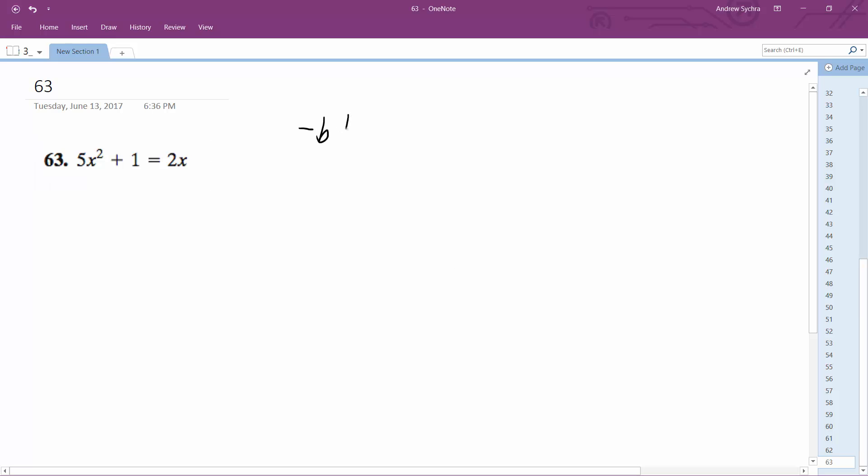So opposite of b plus or minus the square root of b squared minus 4ac all over 2a.